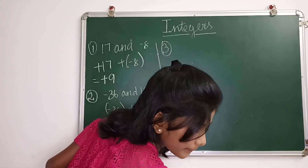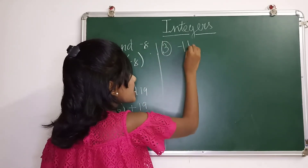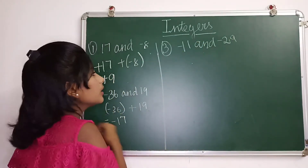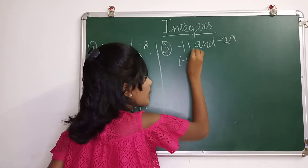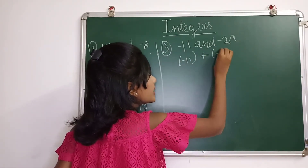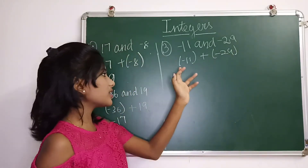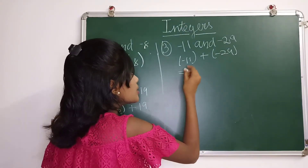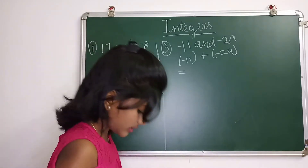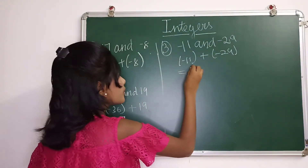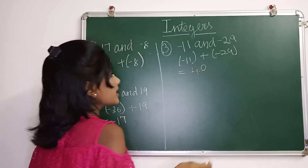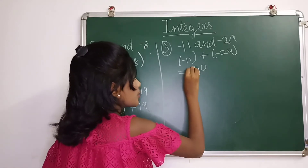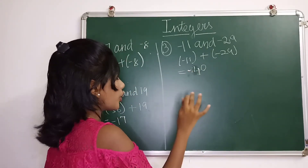The next sum is minus 11 plus minus 29. If there are same signs, we have to add them and keep the sign as such. So 11 plus 29 is 40. The sign is minus, so the answer is minus 40.